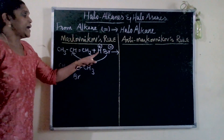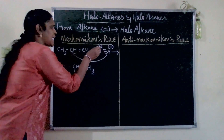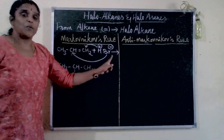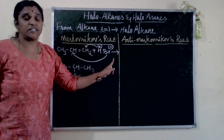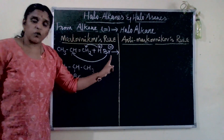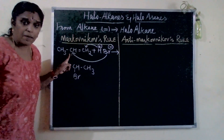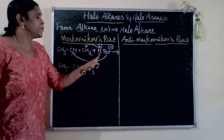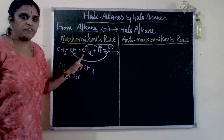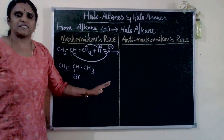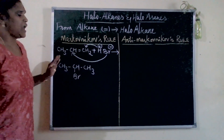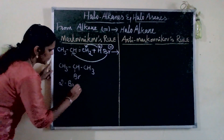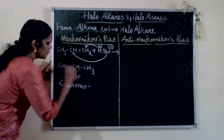The H+ ion will go and attach where there is a greater number of hydrogens. The bromide ion, which is the negative reagent, attaches with the lesser number of hydrogens, and the H+ ion attaches with the greater number of hydrogens. That is the main point. The product is 2-bromopropane.